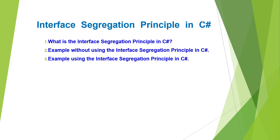First we will discuss what is Interface Segregation Principle. Then we will see one example without implementing the Interface Segregation Principle. Then we will identify the problems if we are not following it. And finally we will see one example implementing the Interface Segregation Principle.